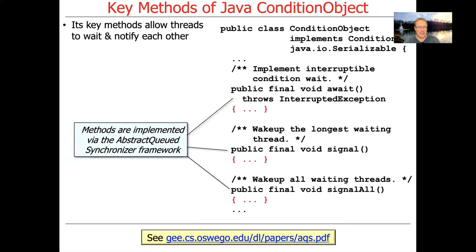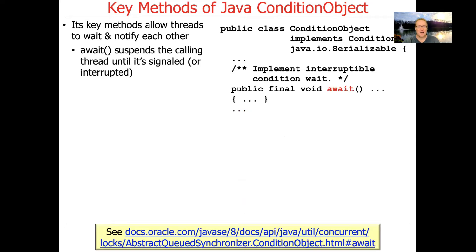As has often been the case with the synchronizers we've looked at up to this point, the method implementations actually come largely from the AbstractQueuedSynchronizer framework, which is the heavy lifter for an awful lot of the stuff here.